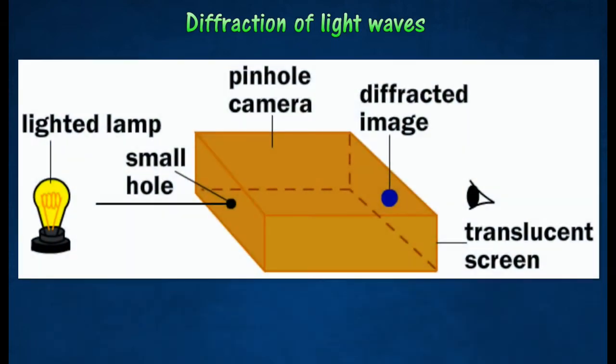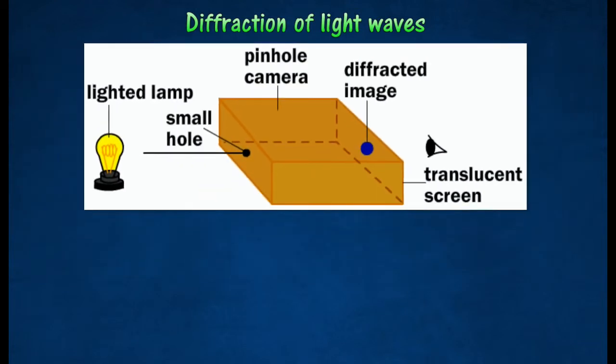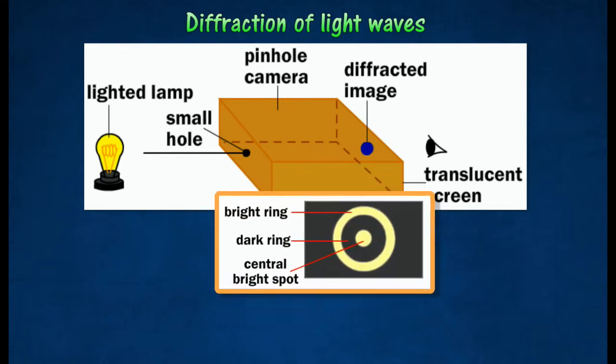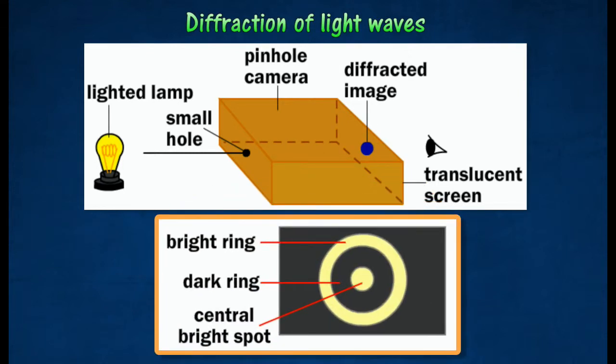The diagram shows a pinhole camera which is used to study the diffraction pattern of light. The diffraction effect of light can be observed when light is passed through a small hole in the pinhole camera. The diffraction pattern of light consists of bright and dark rings with a bright spot at the center.